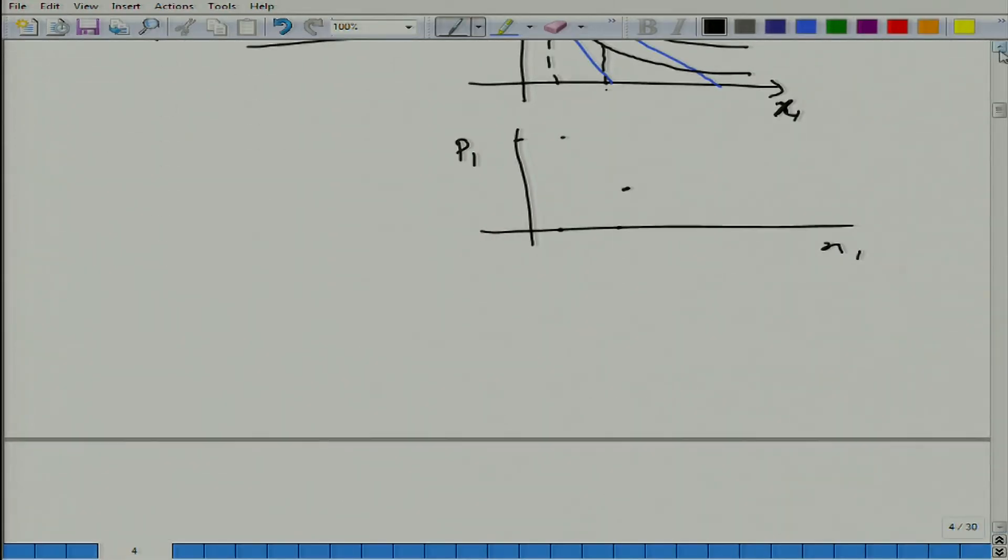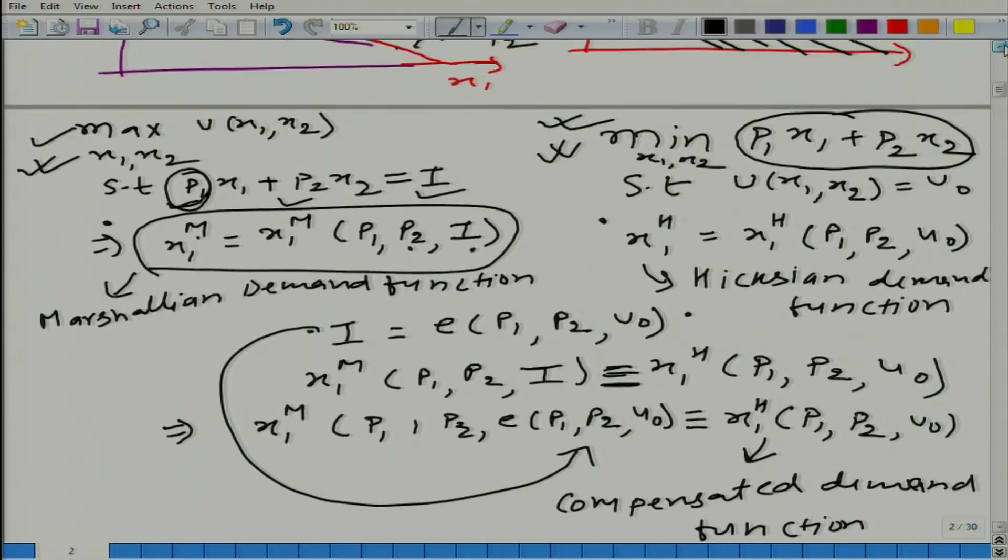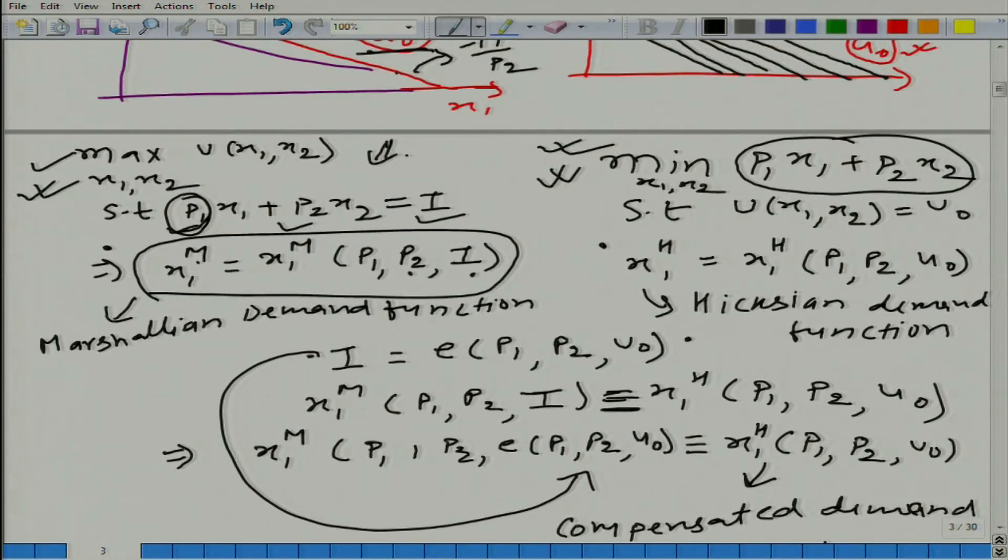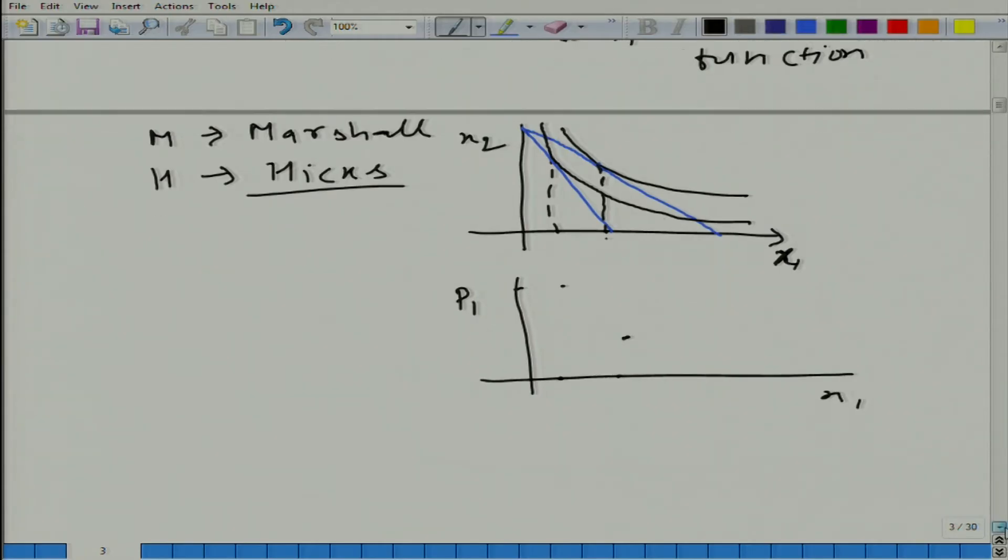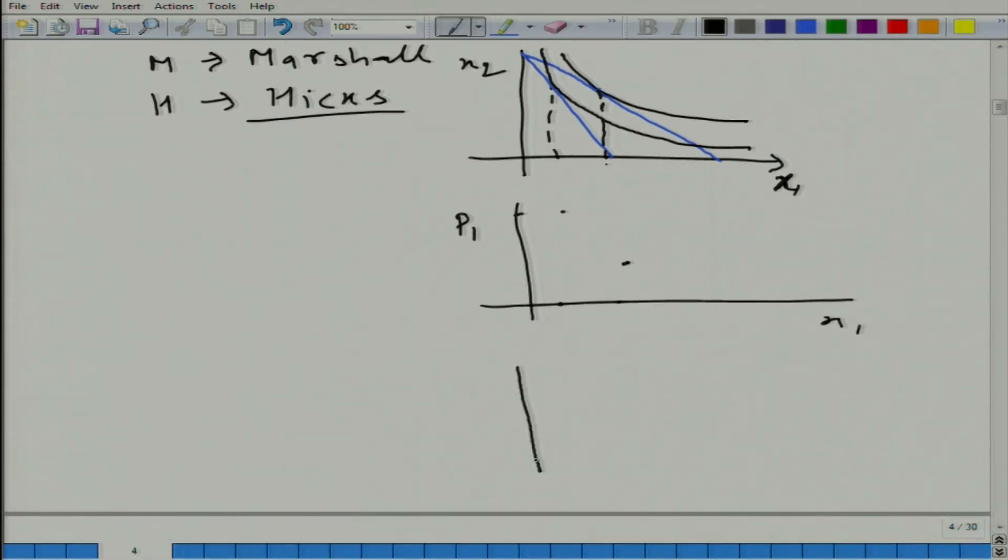Now, let us see if we change the price and rather than starting with this problem, we do this problem. What will happen? Here remember utility level is fixed, here income is fixed, but here utility level is fixed. So, what we are doing rather than fixing the income, we have fixed the utility.